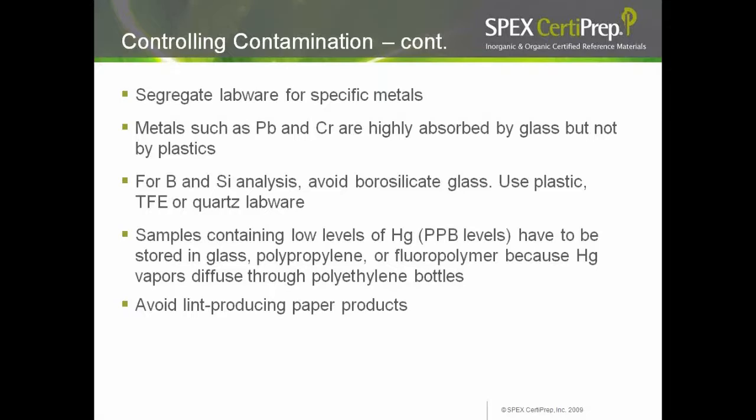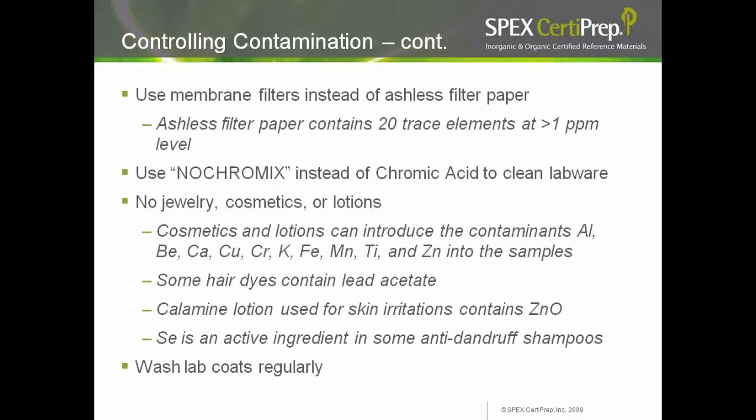Samples containing low levels of mercury, especially at ppb levels, must be stored in glass, polypropylene, or fluoropolymer because mercury vapors diffuse through polyethylene bottles. Avoid lint-producing paper products. Use membrane filters instead of ashless filter paper — ashless filter paper contains 20 trace elements greater than 1 ppm level. Use no-chrome mix instead of chromic acid to clean labware. Do not use jewelry, cosmetics, or lotions — cosmetics and lotions can introduce aluminum, calcium, copper, chromium, potassium, and other contaminants. Some hair dyes contain lead acetate; calamine lotion contains zinc oxide; and selenium is an active ingredient in some anti-dandruff shampoos. Wash lab coats regularly. Algaecides used in swimming pools contain copper — so if you come to the lab after a morning swim, you may increase copper contamination.